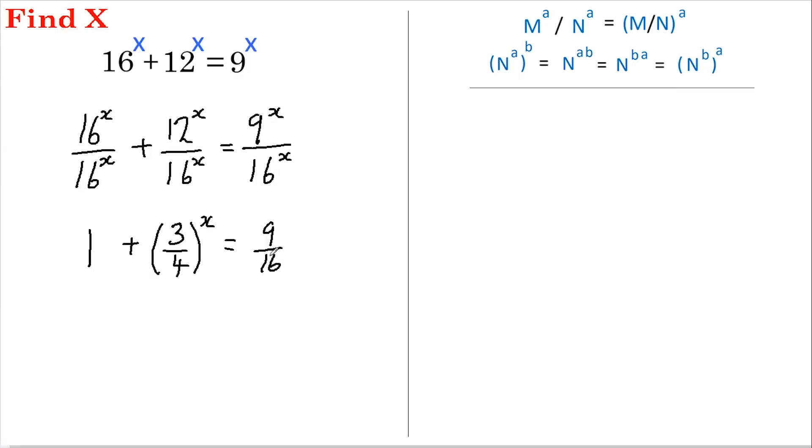And similarly this reduces to 9 over 16 to the power of x. Now 9 can be rewritten as 3 squared and 16 can be rewritten as 4 squared.